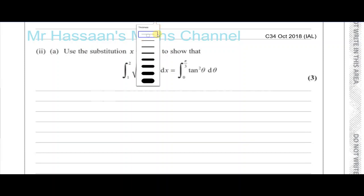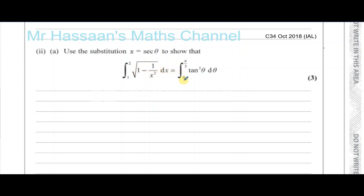Part A of part 2 asks us to use the substitution x equals sec theta to show that the integral between the limits of 1 and 2 of the square root of 1 minus 1 over x squared with respect to x can be written as the integral between the limits of 0 and pi over 3 of tan squared theta d theta. So basically, what they want us to do is use substitution to transform this into that.